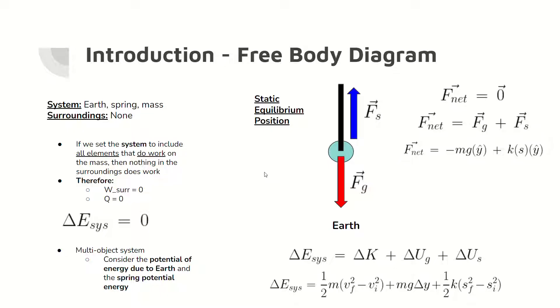Therefore, the total energy of the system equals the sum of kinetic energy, gravitational potential energy, and spring potential energy. The free body diagram of the system at static equilibrium shows the forces acting on the system, including the spring force and the gravitational force.